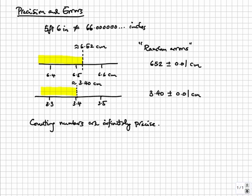Some errors are not random. For example, if my balance is calibrated wrong so that every measurement is smaller by 0.2 grams, this would be called a systematic error.